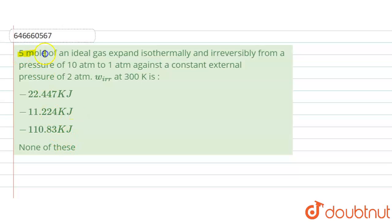The question is: 5 moles of an ideal gas expand isothermally and irreversibly from a pressure of 10 atmosphere to 1 atmosphere against a constant external pressure of 2 atmosphere. We need to find out the work done irreversibly at 300 kelvin.